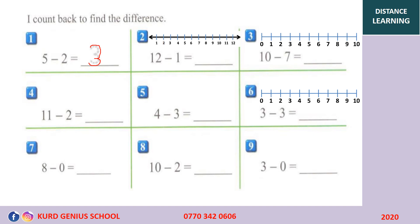Let's do this example: 12 minus 1. We are on number 12. Look here — this is number 12. We count back only one number, which is 11. So 12 minus 1 equals 11. All of you write 11 here.